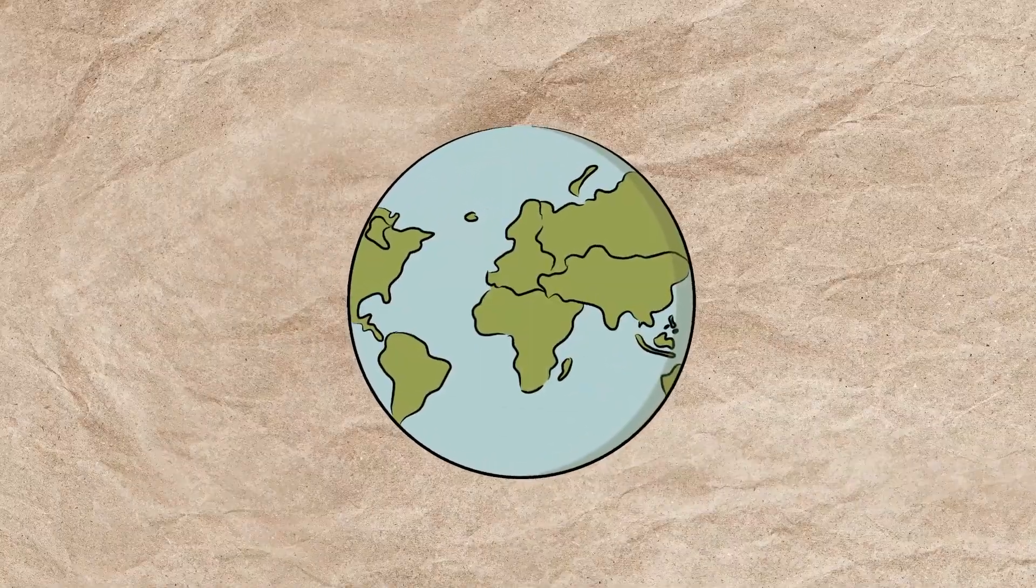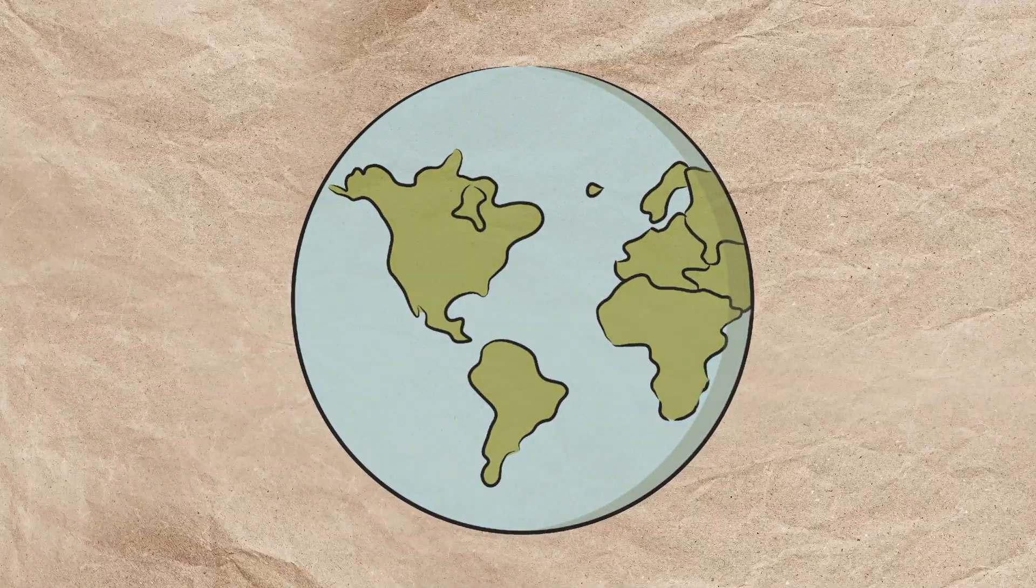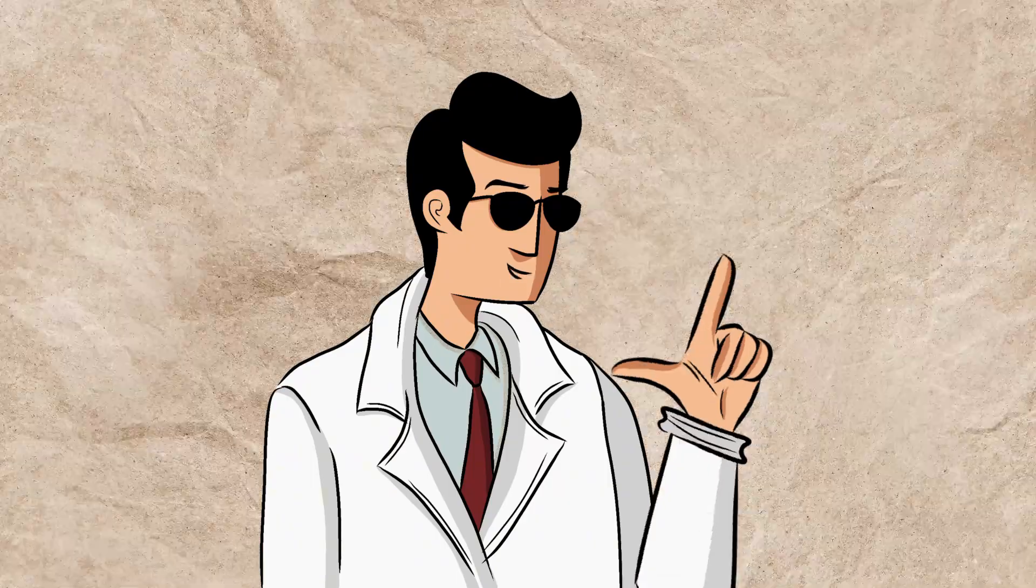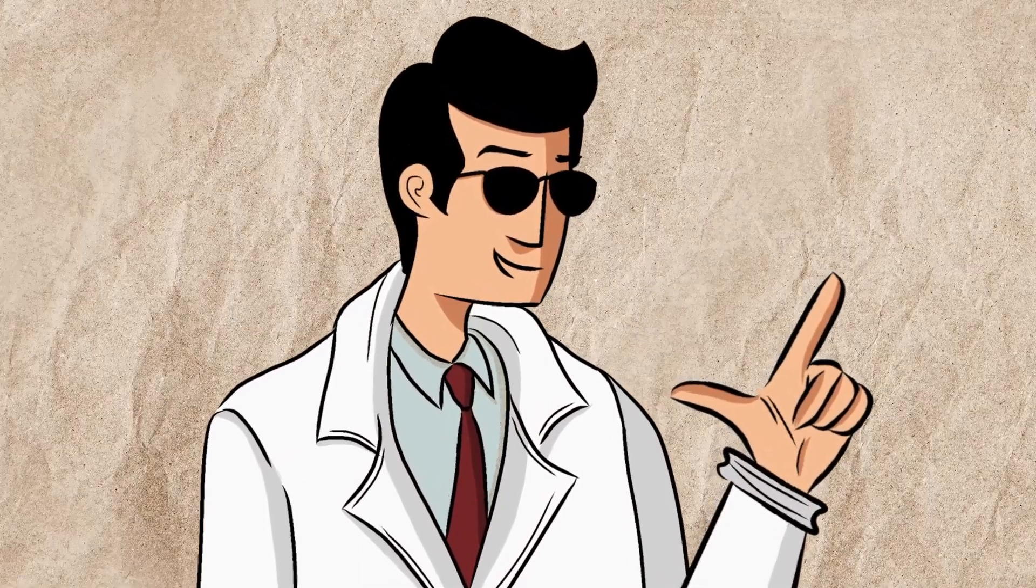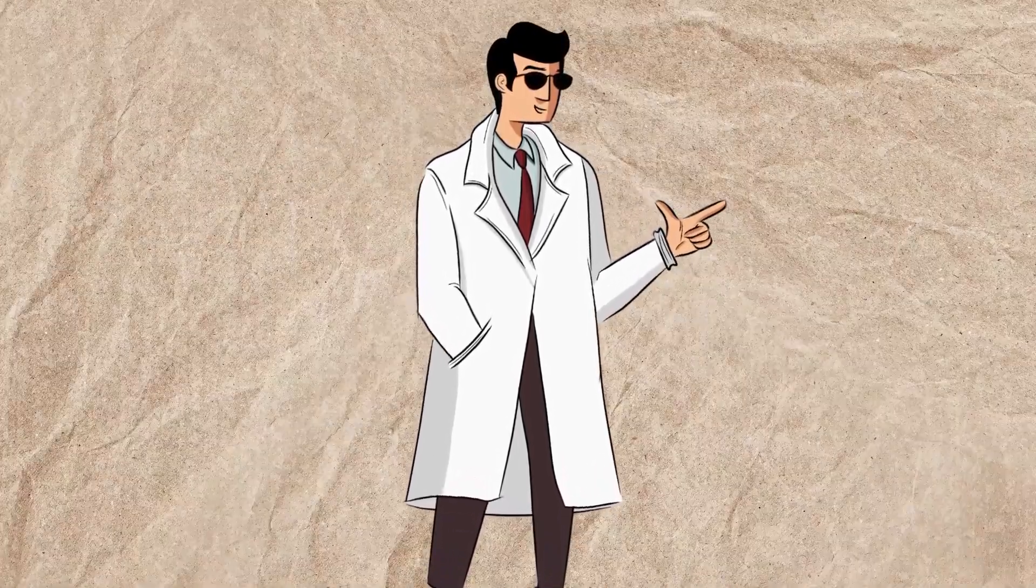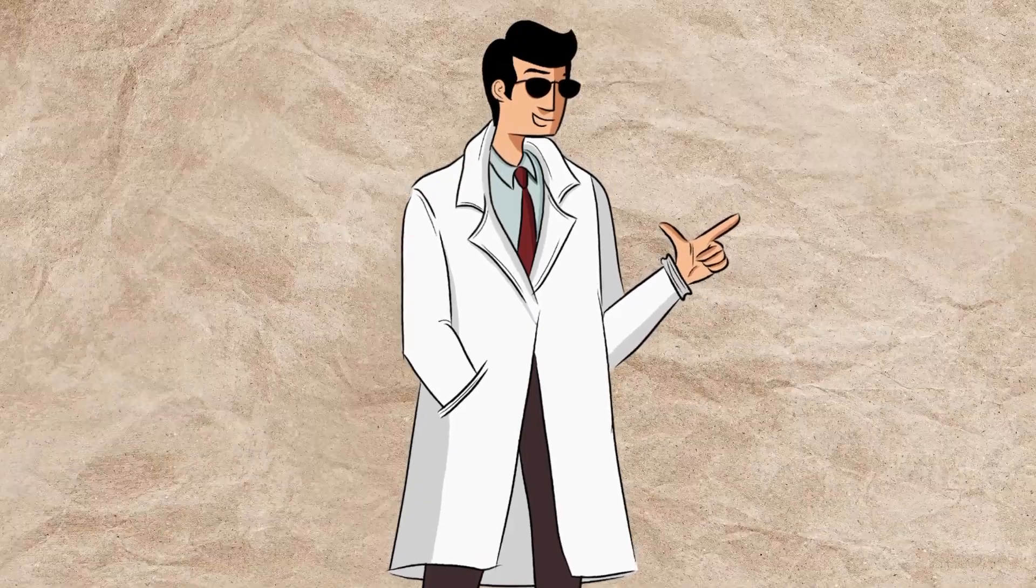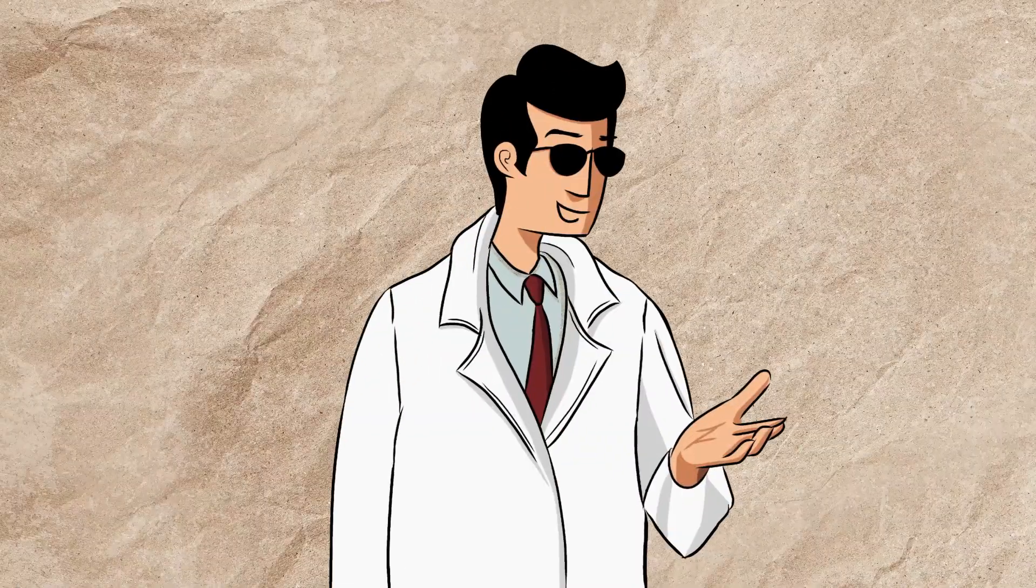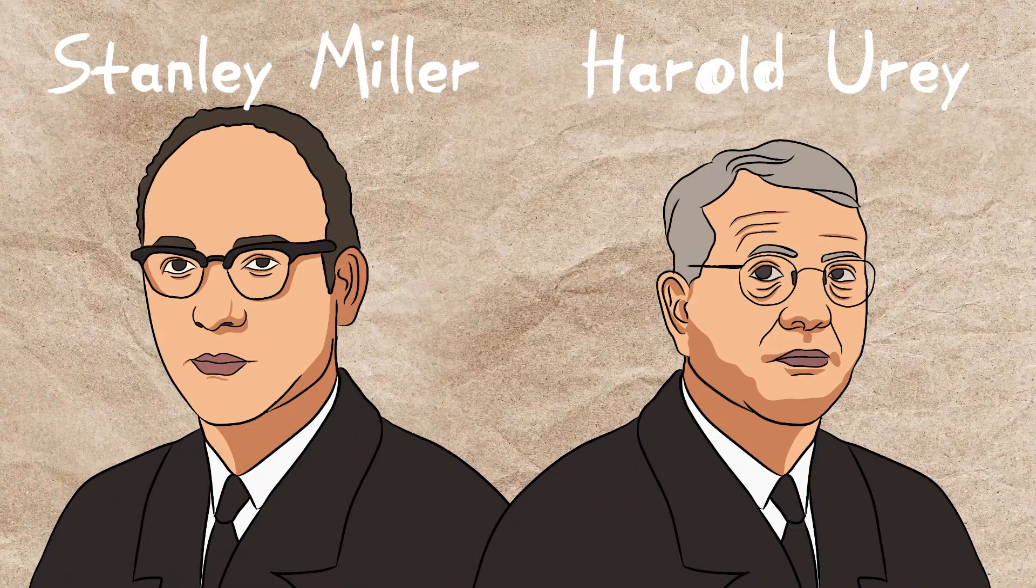While the possible locations for life's origins on Earth spark endless curiosity, they are only part of the story. To truly unravel the mystery, we must also explore the scientific theories that delve into how life itself might have formed, whether through Earth's natural processes or with a little help from the cosmos. When it comes to understanding how life emerged on Earth, there are several fascinating scientific theories that offer different explanations. One of the earliest and most well-known ideas is that life began in what is often called a primordial soup. Back in 1952, Stanley Miller and Harold Urey, a Nobel-winning chemist, set out to explore this theory.